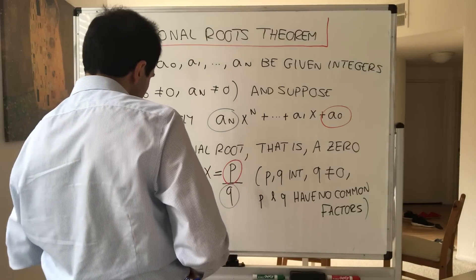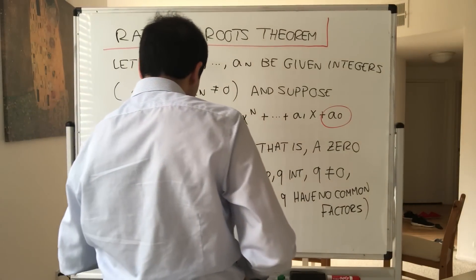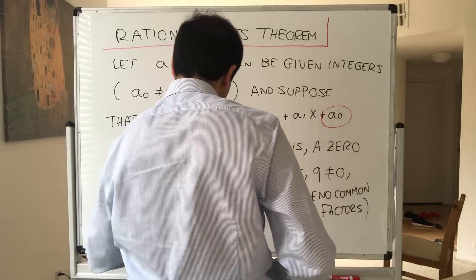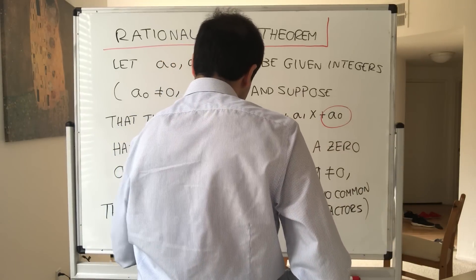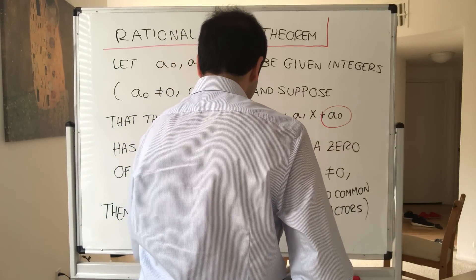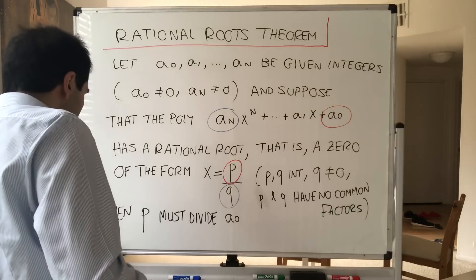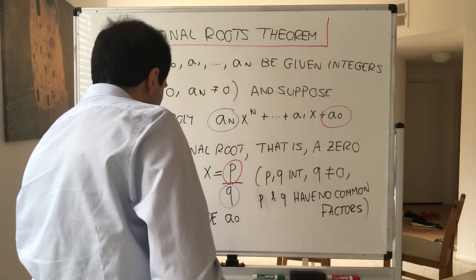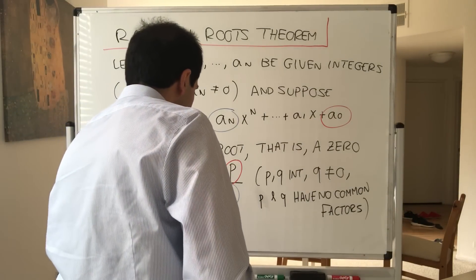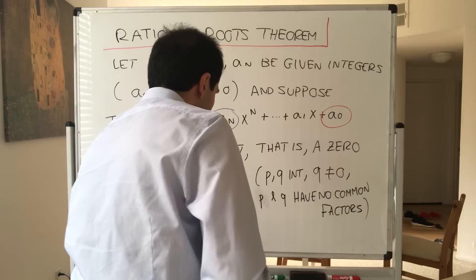Namely, it turns out if this polynomial has a rational root, then the numerator has to divide the constant term, and the denominator has to divide the leading term. Then p must divide a₀ and q must divide aₙ.